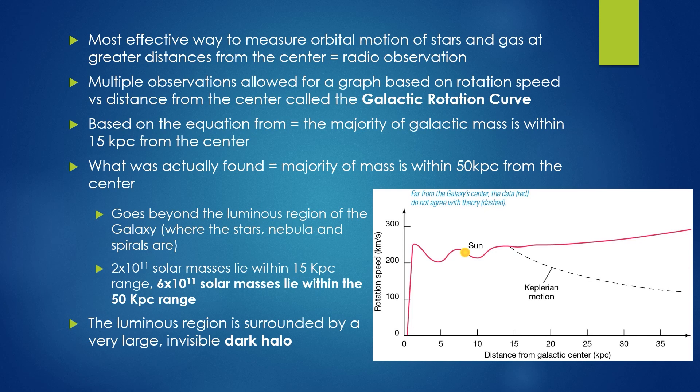Multiple observations of stars at different distances have created a rotation speed versus distance from center plot, called the galactic rotation curve. The majority of galactic mass would be found within the 15 kiloparsec region and would lessen after this point where luminosity drops. However, what we see is that the amount of mass within 50 kiloparsecs is 6 times 10 to the 11th solar masses. 2 times 10 to the 11th solar masses lies within 15 kiloparsecs, meaning there's at least twice as much mass outside the luminous part of our galaxy where stars, nebulae, and spiral arms are. This means our galaxy is actually much larger than we previously thought.